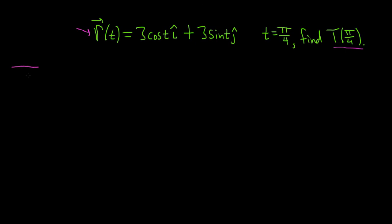The formula for the unit tangent vector is big T of little t, and it's equal to the derivative of r divided by the magnitude of the derivative of r.